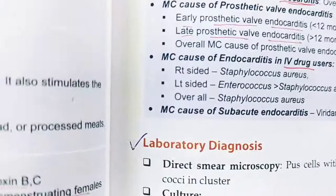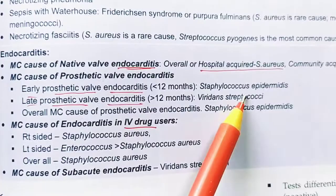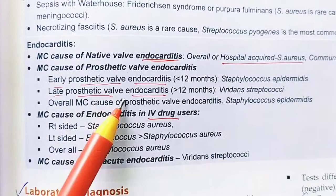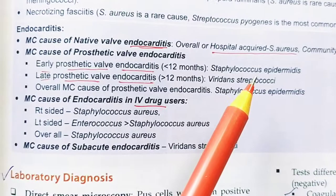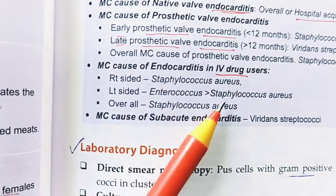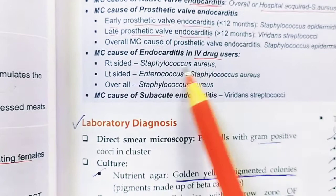For prosthetic valve endocarditis: early prosthetic valve endocarditis (less than 12 months) is caused by Staphylococcus epidermidis, while late prosthetic valve endocarditis (greater than 12 months) is caused by viridans streptococci. In IV drug users, right-sided endocarditis is caused by Staphylococcus aureus, and left-sided endocarditis is caused by Enterococcus, which is more common than S. aureus overall. The most common cause of subacute endocarditis is viridans streptococci.